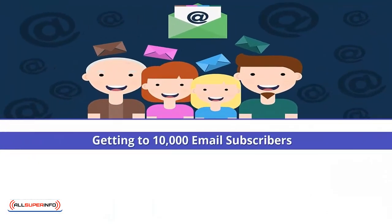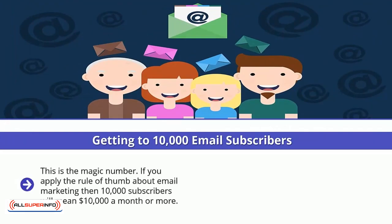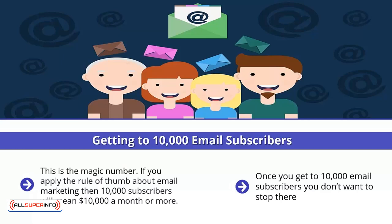Getting to 10,000 email subscribers is the magic number. If you apply the rule of thumb about email marketing, then 10,000 subscribers will mean ten thousand dollars a month or more. So your target for the third month — your 90-day period — is to have 10,000 subscribers on your email list, using the traffic methods we will explain in a later section. Once you get to 10,000 email subscribers, you don't want to stop there; keep on building your list for as long as you can.